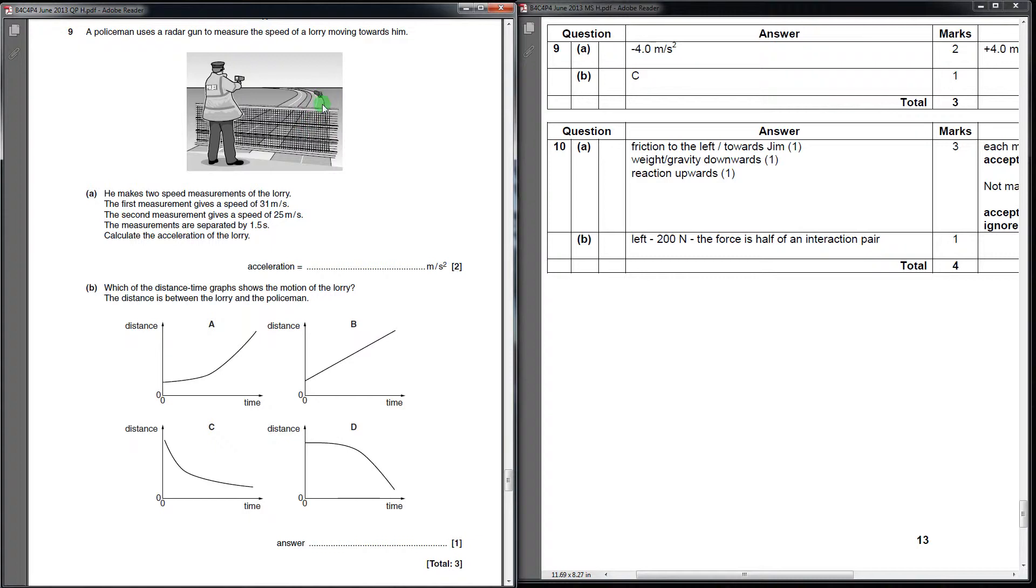This lorry is not changing direction throughout the entire thing. So if you have a situation like that where it's just going straight towards the policeman, we can use speed in the velocity part of the equation. Instead of changing velocity, what we're really doing here is changing speed, because it's not changing direction.